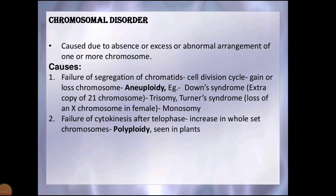Chromosomal disorders may be due to changes in the number of either autosomes or sex chromosomes, or from alteration in chromosome structure, or by addition or loss of one chromosome (aneuploidy), or addition of more sets (polyploidy). Aneuploidy occurs due to the failure of segregation of chromatids during cell division, resulting in the gain or loss of a chromosome in the gametes formed, giving rise to an abnormal number of chromosomes in the zygote. Examples are Down syndrome, Turner syndrome, and Klinefelter syndrome.